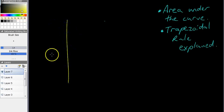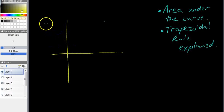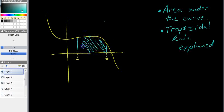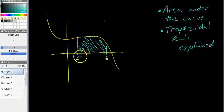You'll remember from last year that area under the curve is pretty straightforward. You might have a function that looks something like that — let's give that a value of 2 and this a value of 6. Finding the area under the curve just meant finding this area — the area between the x-axis and the function between two values. It might be 2 and 6, might be 1 and 7, might be negative 5 and whatever. You might have done that using integration last year.